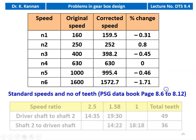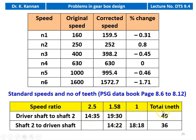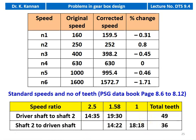Based on the speed ratios, we determine the number of teeth. From driver shaft to shaft 2, there are two transmission ratios: 2.5 and 1.58. For ratio 2.5: Z1 = 14, Z2 = 35. For ratio 1.58: Z1 = 19, Z2 = 30. Total sum of teeth = 49. From shaft 2 to driven shaft, the ratios are 1.58 and 1. For ratio 1.58: 14 and 22 teeth. For ratio 1: 18 and 18 teeth. Total sum = 60. The check condition is Z1 + Z2 = Z3 + Z4 = 49 (between two shafts), ensuring constant radial distance between adjacent shafts.